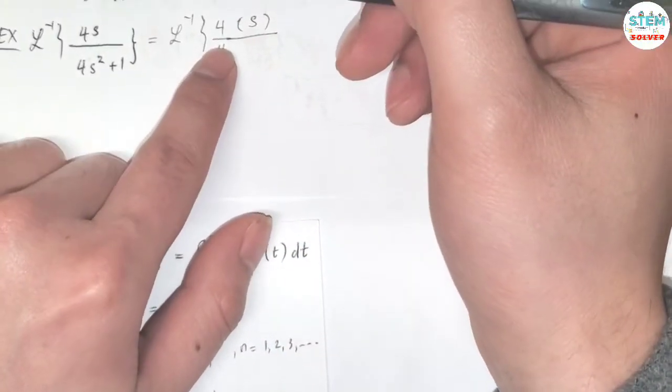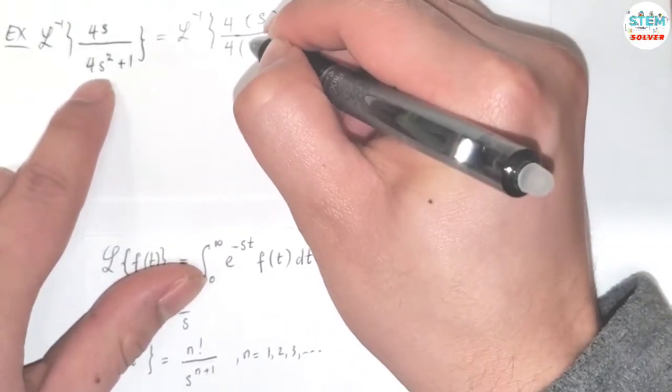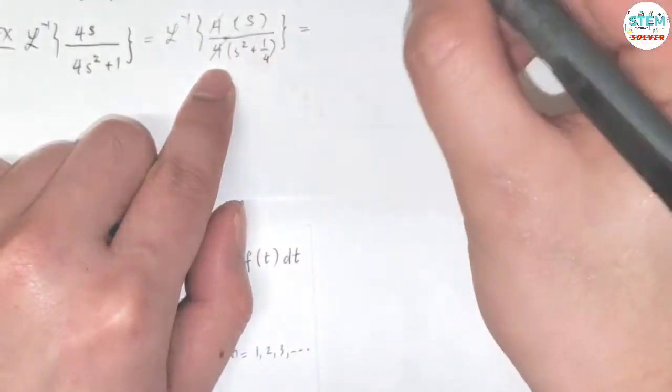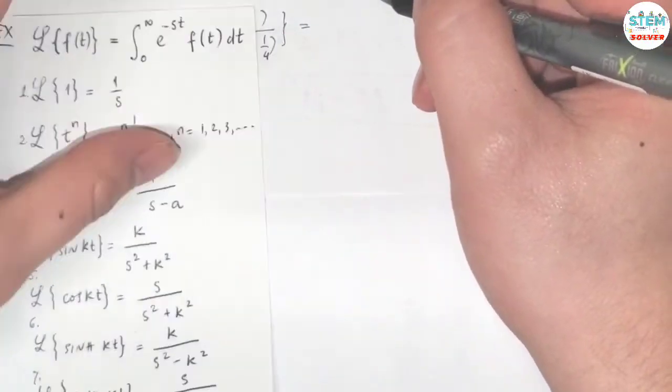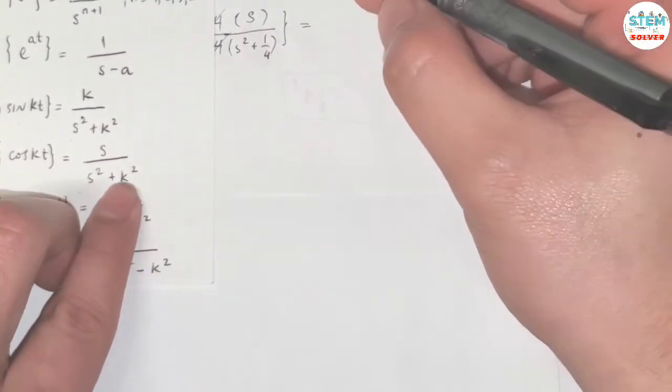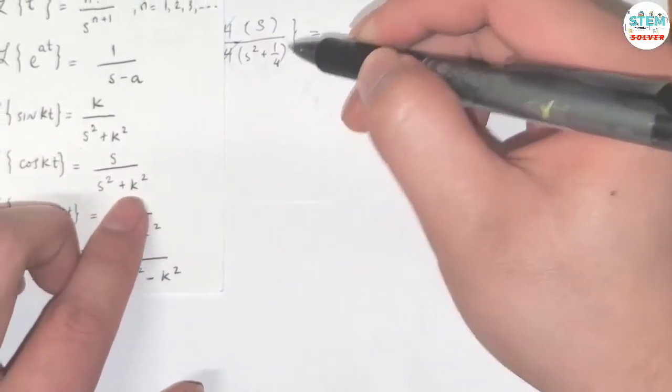So pull out the 4 on top, and on the bottom 4 on the 4 I left with s squared plus 1 over 4. And 4 over 4 cancel out. Now I have s over s squared plus k squared, which is 1/4, and 1/4 can be written as 1 half squared.